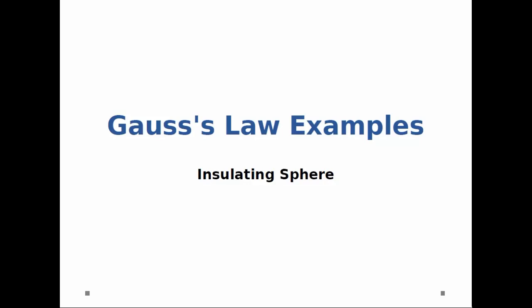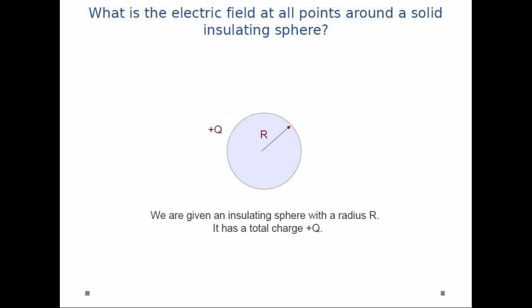So this is an example with Gauss's law. Specifically, we're going to look at an insulating charge sphere. I give you an insulating sphere with radius R. It has a total charge plus Q distributed uniformly over the entire sphere. And I ask, what is the electric field at all points around the solid insulating sphere?